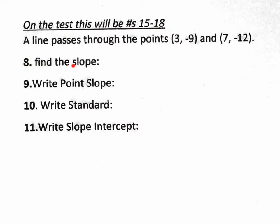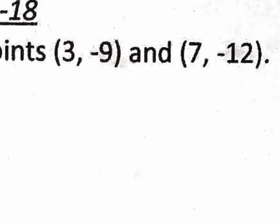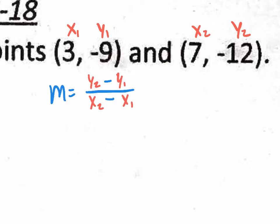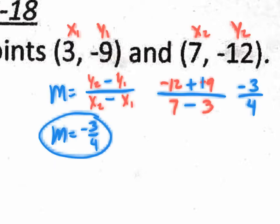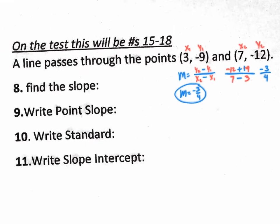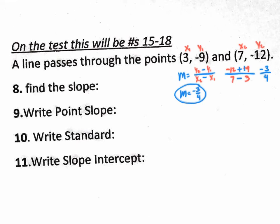The first thing they ask for is to find the slope — that's logical because the only thing you can do with two points is find the slope using the slope formula. I'm going to zoom in, label my coordinates, write down the formula, do the subtractions first, then plug in values. y2 is -12, y1 is -9, x2 is 7, x1 is 3. Changing minus minus to plus plus, the slope is -3/4. Write m = -3/4 in your answer column for one point.